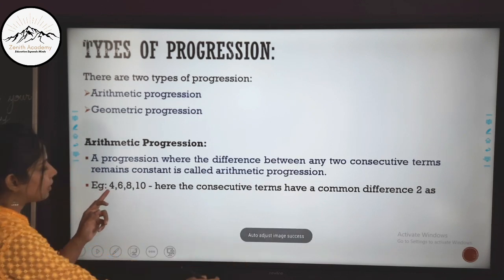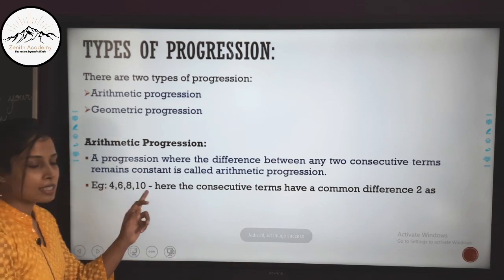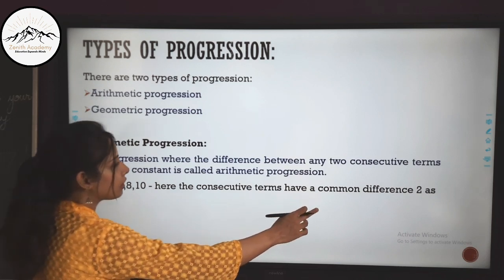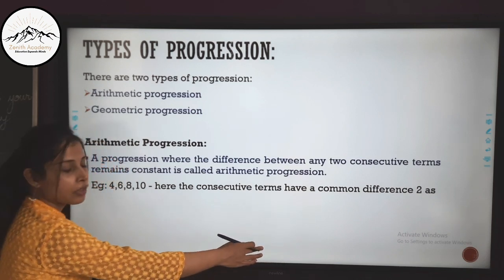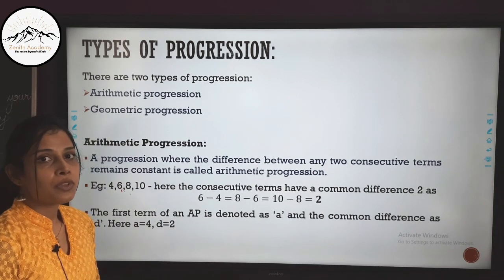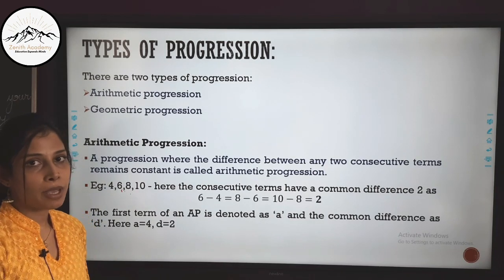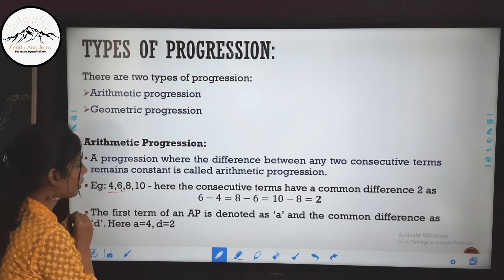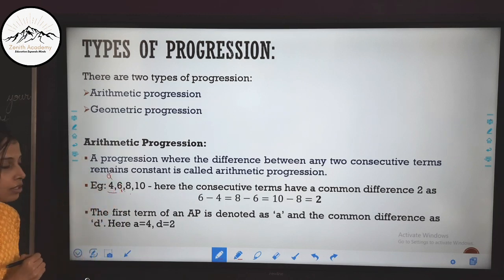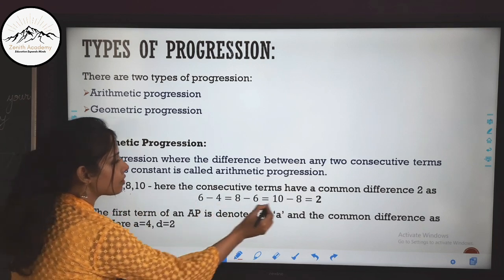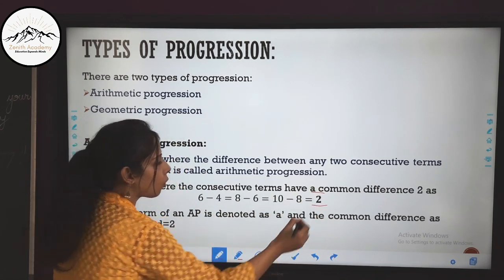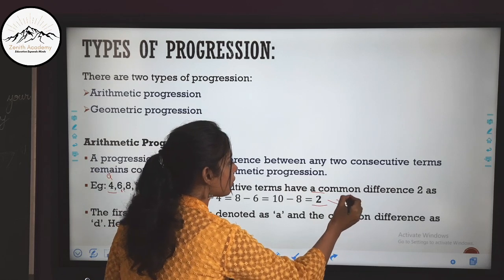Similarly, consider 4, 6, 8, 10 — the consecutive terms also have a common difference. For an AP, always remember: the first term is denoted by A, and the common difference — which here is 2 — is always denoted by D.